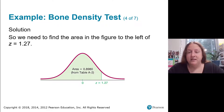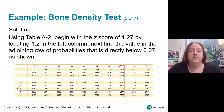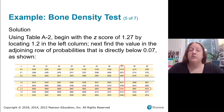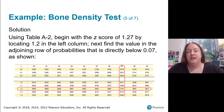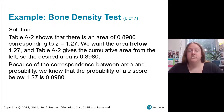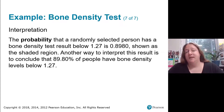So the answer is 0.8980. Looking at the table: for z = 1.27, we find the row corresponding to 1.2 and the column corresponding to 0.07, and we get 0.8980. The probability that this randomly selected person has a bone density score of 1.27 or less is 0.8980, or equivalently, 89.8% of people have bone density levels below 1.27.